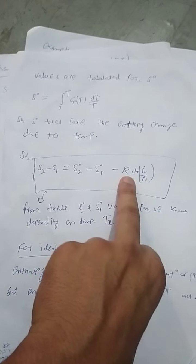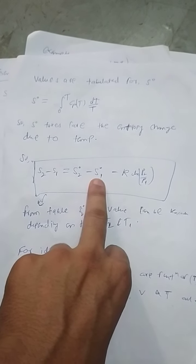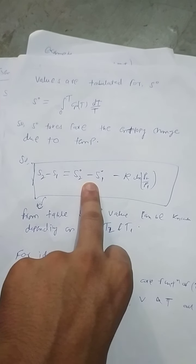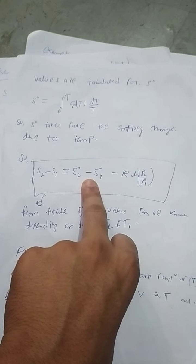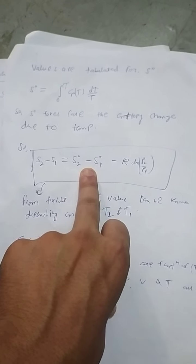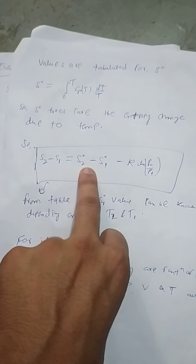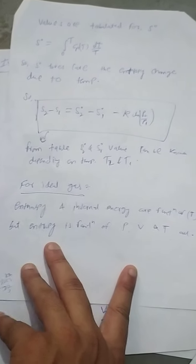This whole second term would not change because they are not function of temperature. s0_2 and s0_1 represent the change in entropy due to the temperature difference when specific heats are not constant. So they can be easily seen from the table and calculated.